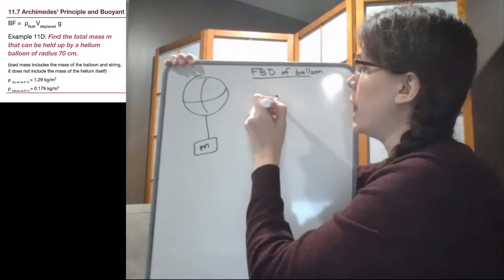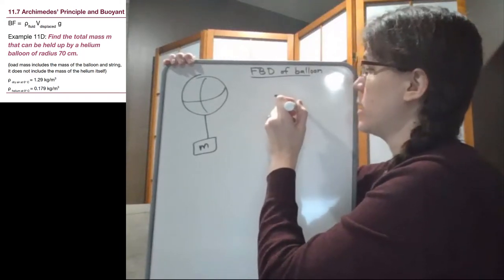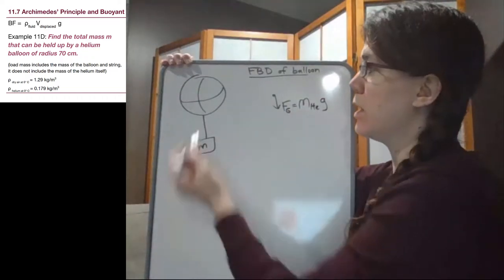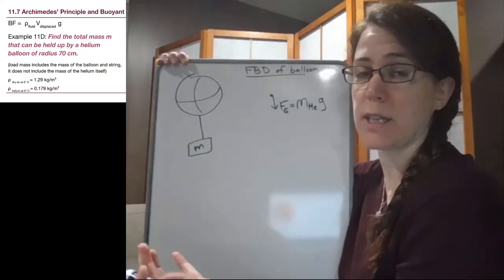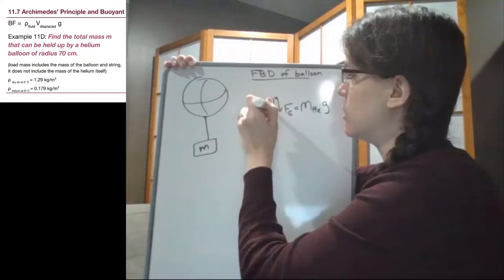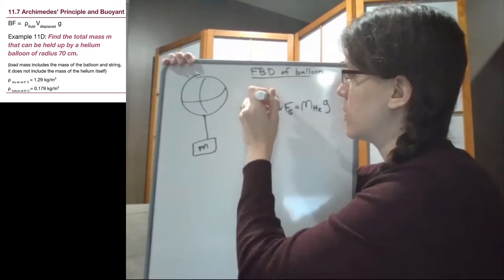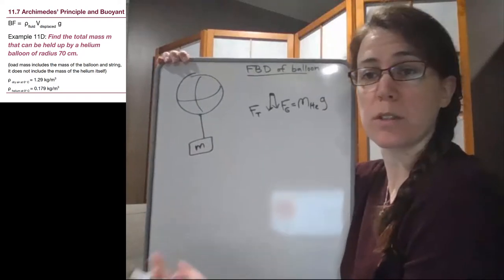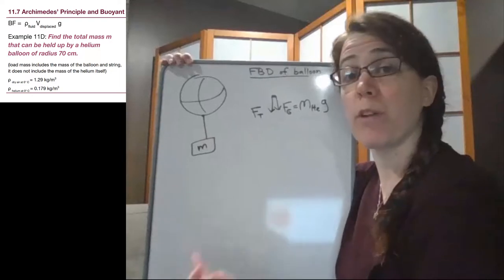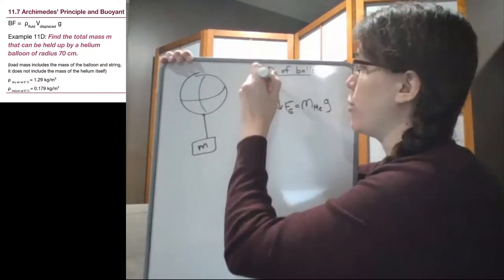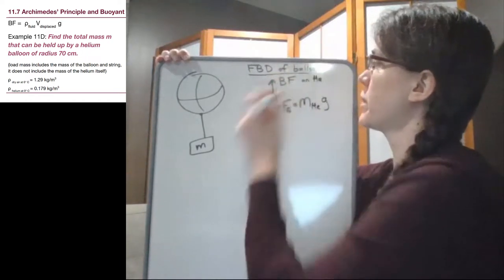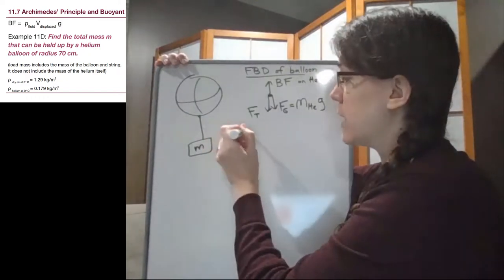We have the weight of the helium, so the mass of helium in the balloon times g, the actual material inside the balloon, the gas. We have the fact that this rope is attached here so there's a tension down, and we have the buoyant force because this is a gas in air. The surrounding air, the buoyant force does matter to us, so we have a buoyant force up on the helium.